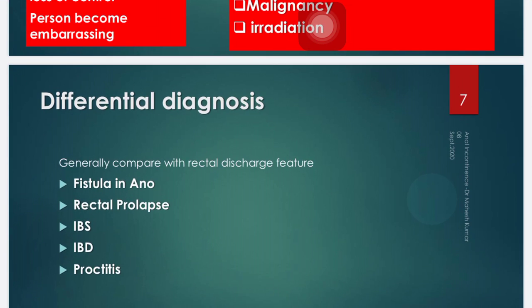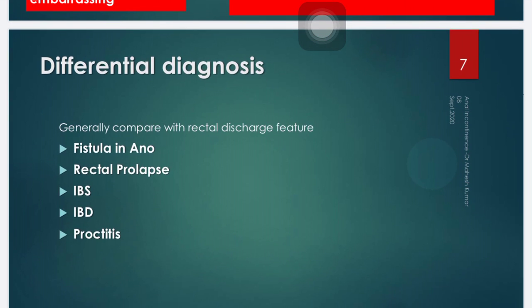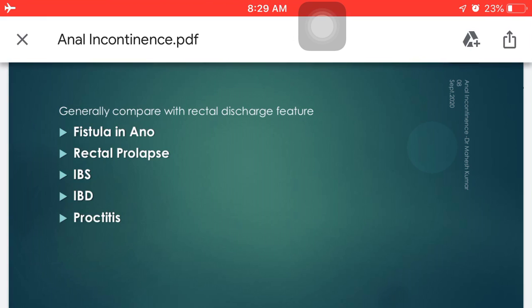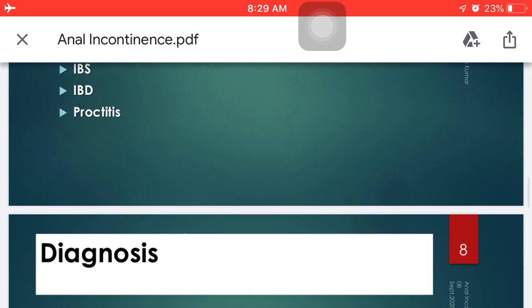What are the differential diagnoses of anal incontinence? The differential diagnosis is solely dependent on the rectal discharge. The cardinal feature in anal incontinence is rectal discharge, and from those features other diseases may be excluded or differentiated. Differential diagnosis should be made with fistula-in-ano, rectal prolapse, IBS (irritable bowel syndrome), IBD (inflammatory bowel disease), proctitis, and colitis — conditions in which rectal discharge may be seen.